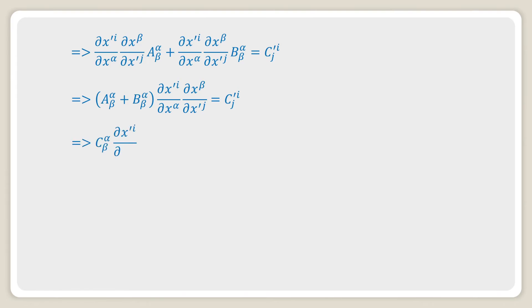Which implies A^α_β plus B^α_β can be written as C^α_β using equation number 1. Which implies C'^i_j equals C^α_β(∂x'^i/∂x^α)(∂x^β/∂x'^j).